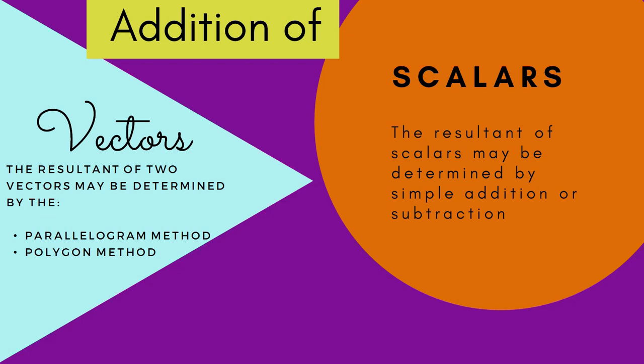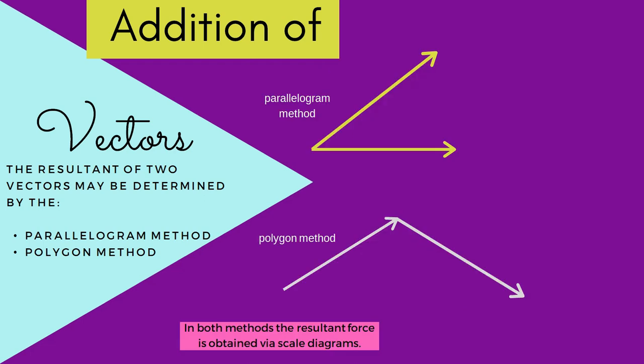To work out vector quantities, you cannot simply add them — you have to draw them out. Vectors are represented as arrows. With vectors, you cannot simply add or subtract; you would have to use the parallelogram method or the polygon method, depending on the direction the arrows are traveling. Scalars are easier — you can just add and subtract using the conventional method.